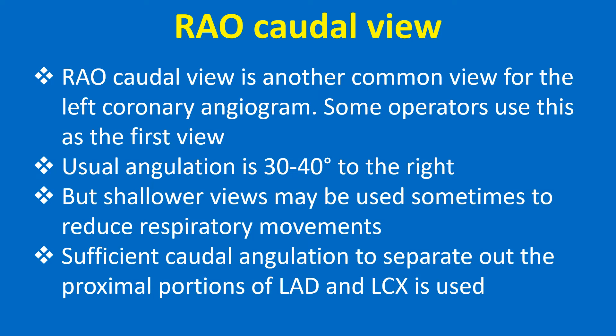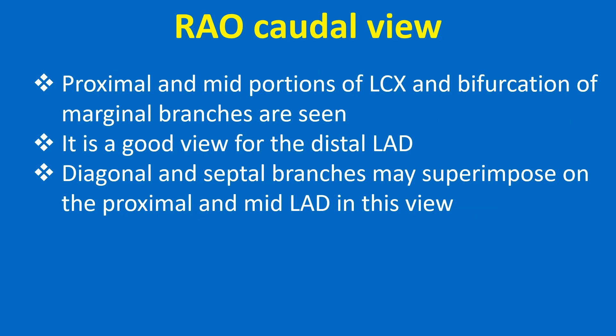RAO caudal view is another common view for the left coronary angiogram, and some operators use this as the first view. Usual angulation is 30 to 40 degrees to the right, though shallower views may be used to reduce respiratory movement. Sufficient caudal angulation is used to separate out the proximal portions of the LAD and LCX. Proximal and mid portions of LCX and bifurcation of marginal branches are seen, and it is a good view for the distal LAD.